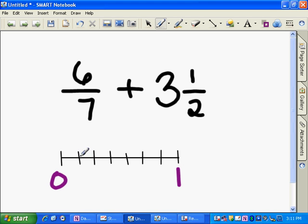And 6 sevenths is, there's 1 sevenths, 2 sevenths, 3 sevenths, 4 sevenths, 5 sevenths. Here is 6 sevenths. 6 sevenths is closer to 1 than it is to 0. So we're going to round 6 sevenths to 1.